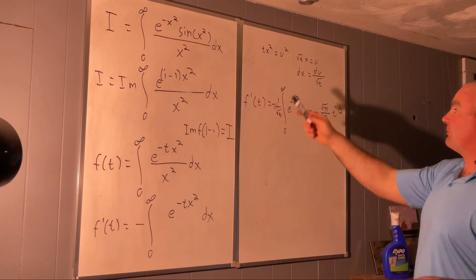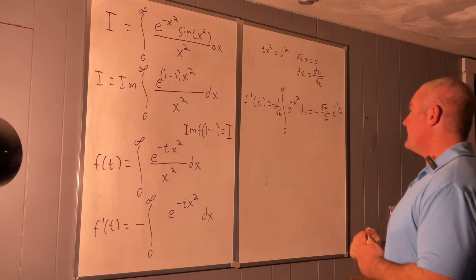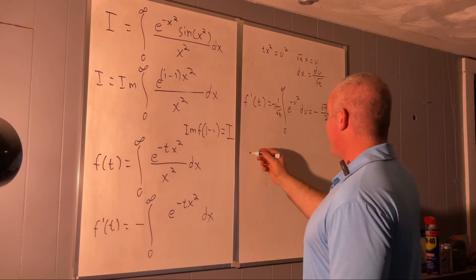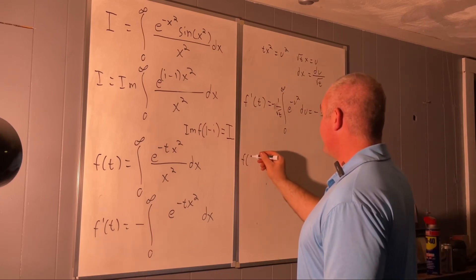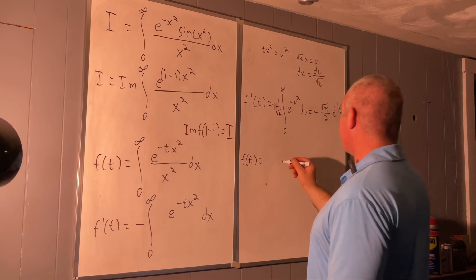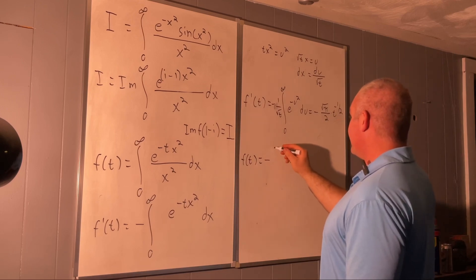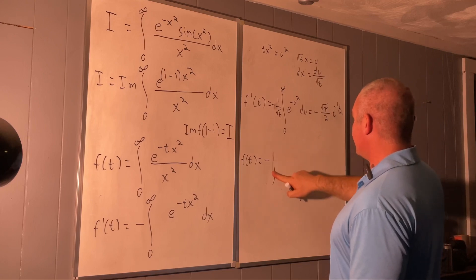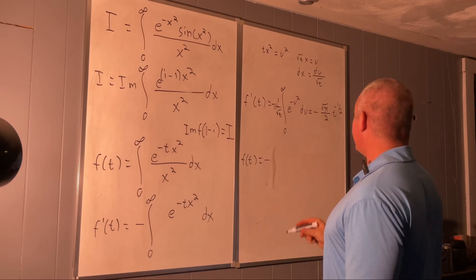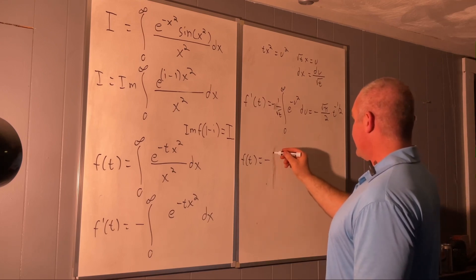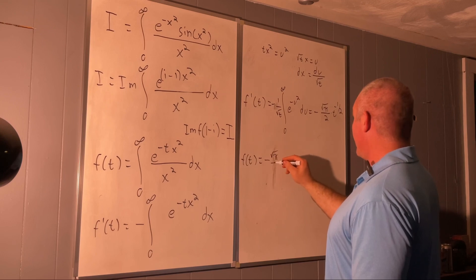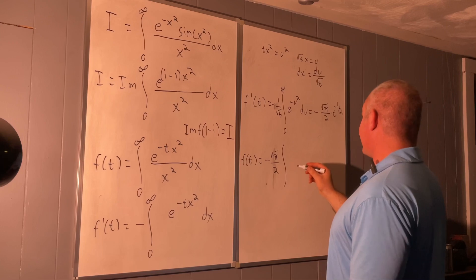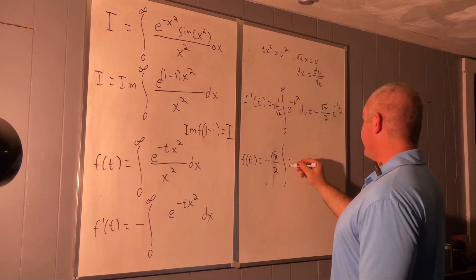We don't want F prime of t — we want F of t — so we go backwards by integrating. F of t is going to be equal to negative square root of pi over two times the anti-derivative with respect to t of t to the negative one half.